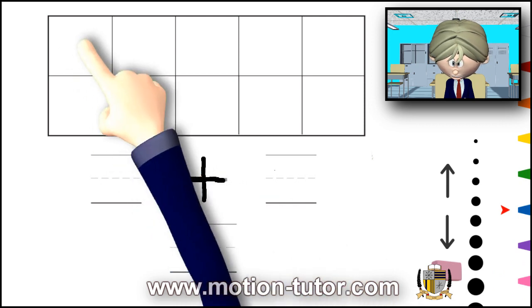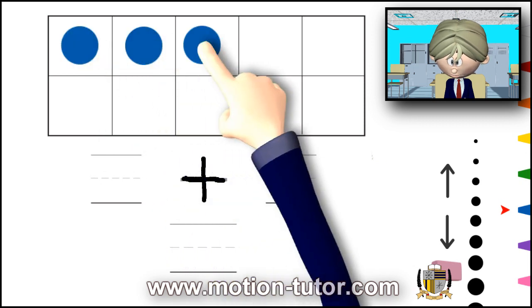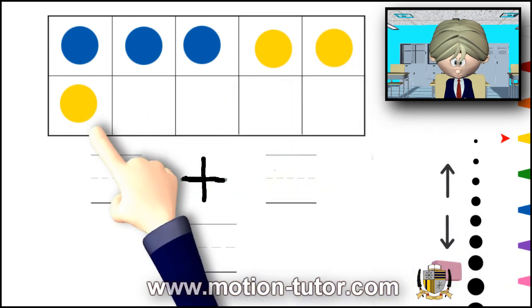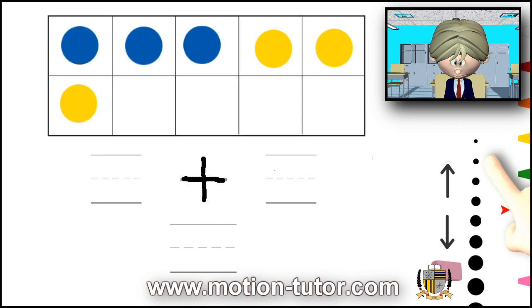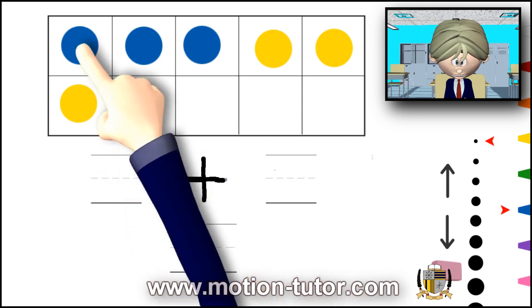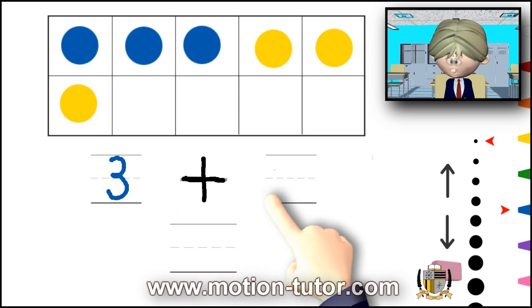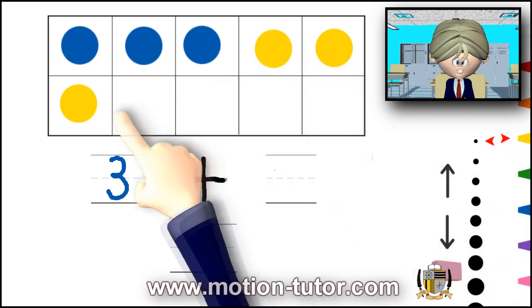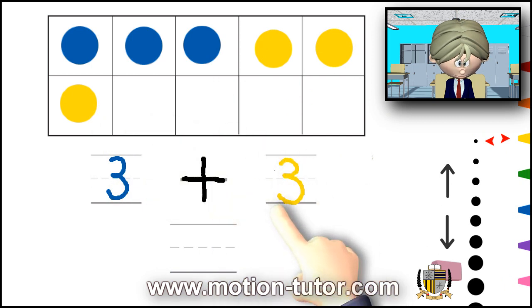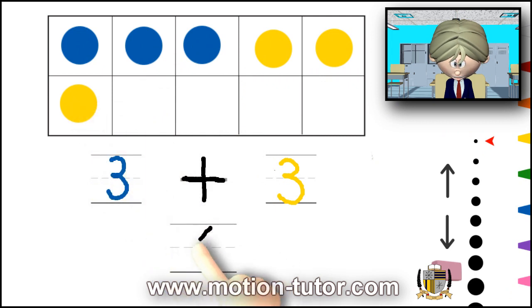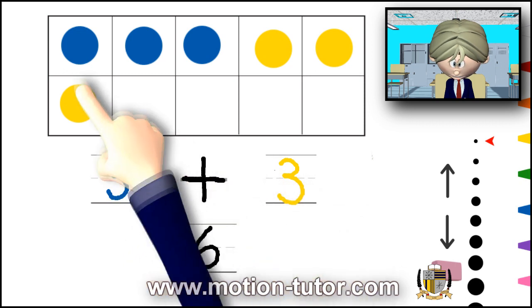So when I have something like this. 1, 2, 3. And then 1, 2, 3. I have 1, 2, 3. So it's 3 blues. And 1, 2, 3. 3 yellows. And together, 1, 2, 3, 4, 5, 6. Together is 6. So that means 3 plus 3 is 6. And we have shown it here.